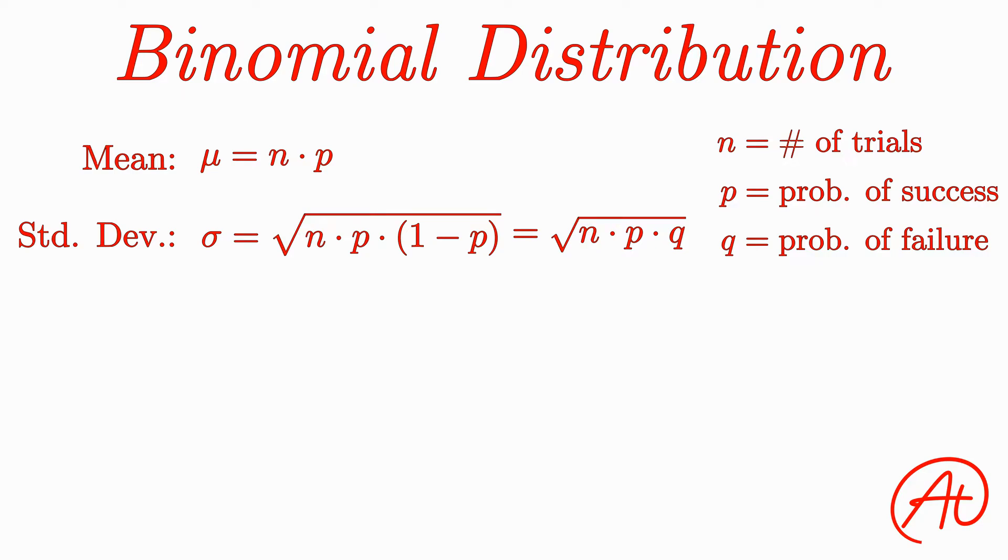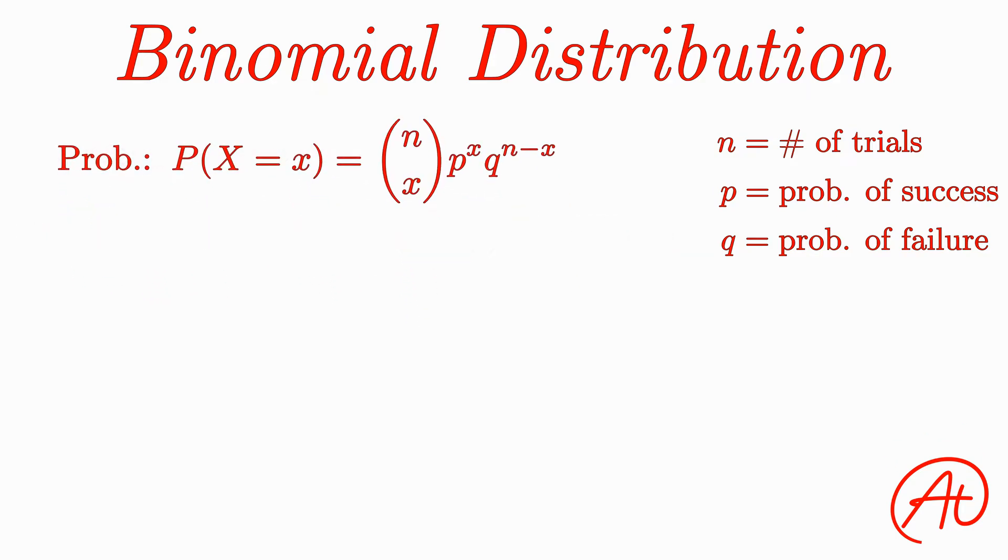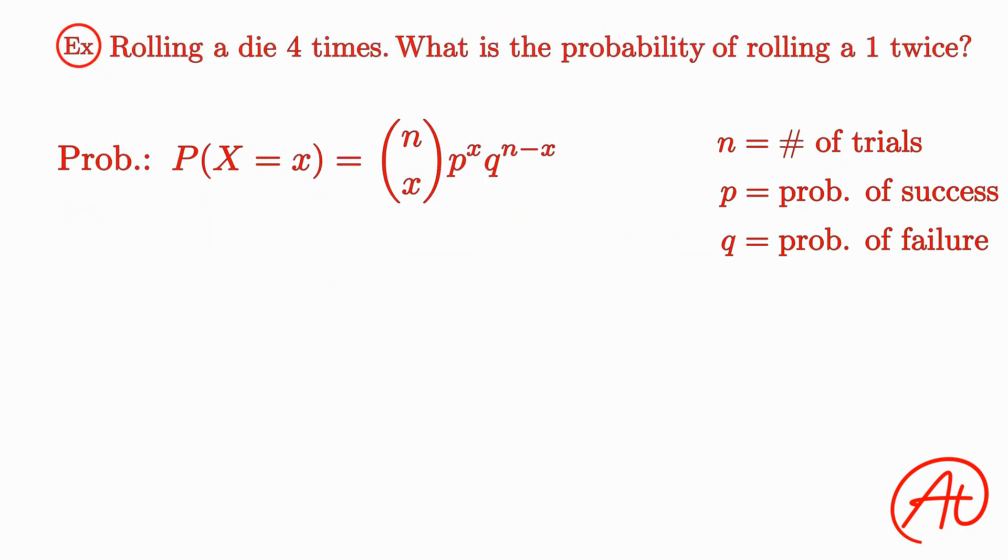Finally, let's go over some of the more interesting stuff, probability. If you want to calculate the probability of getting x number of successes in your experiment, all you do is n choose x times p raised to x times q raised to n minus x. To see what the heck this means and where it comes from, let's dissect it a bit with our previous example of rolling a die four times.